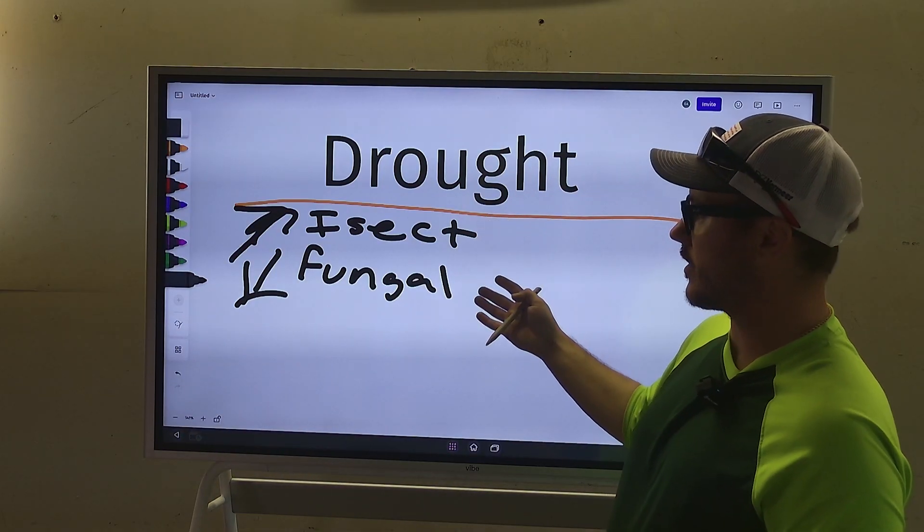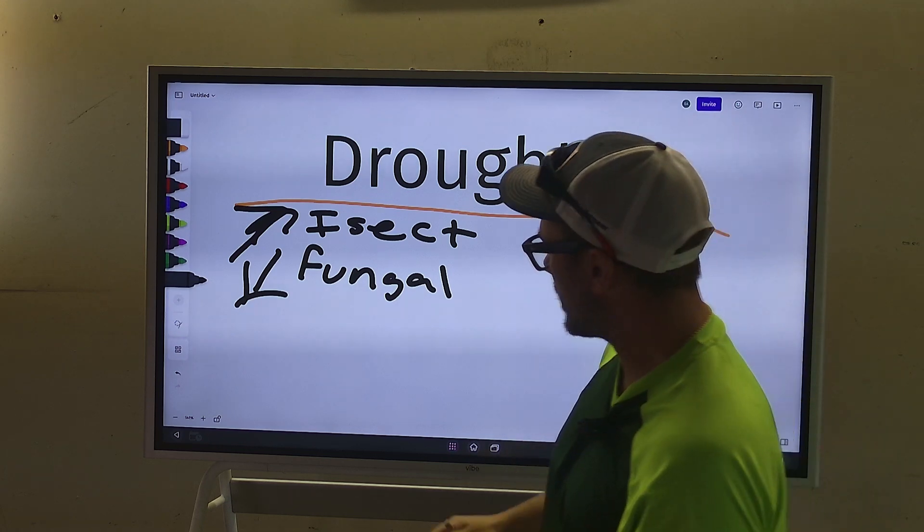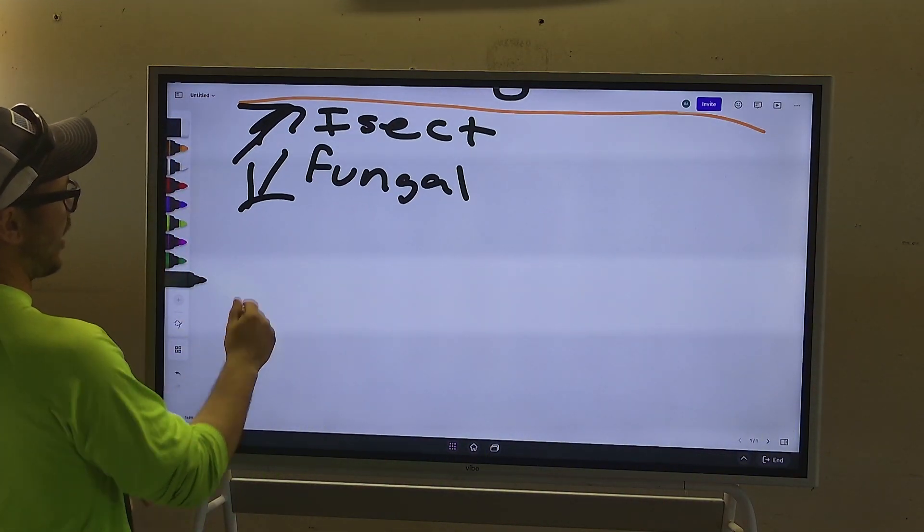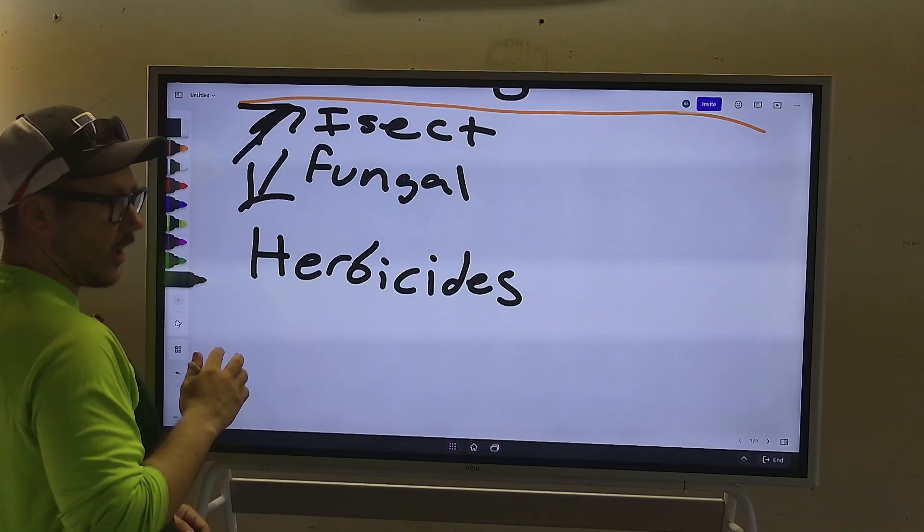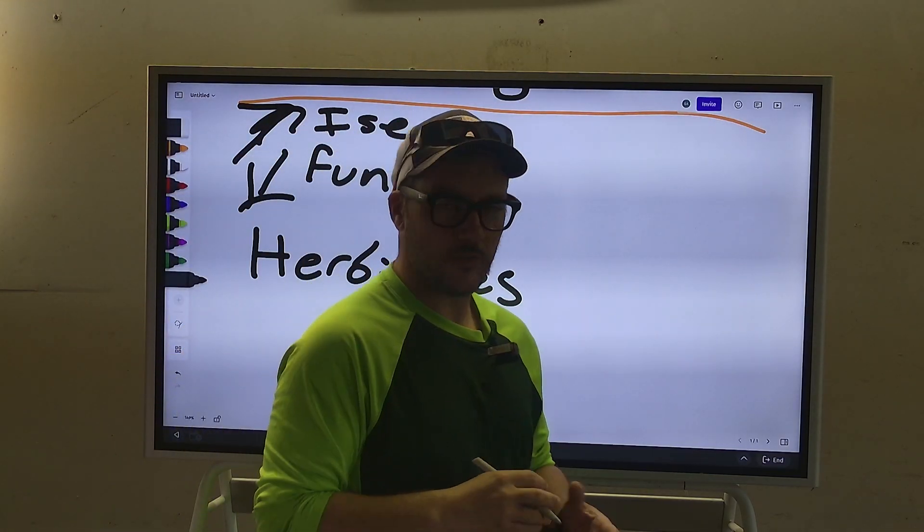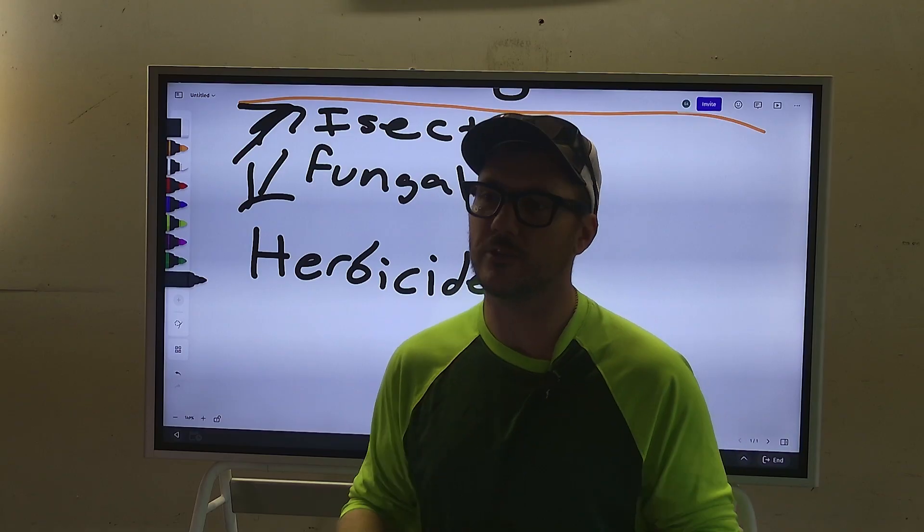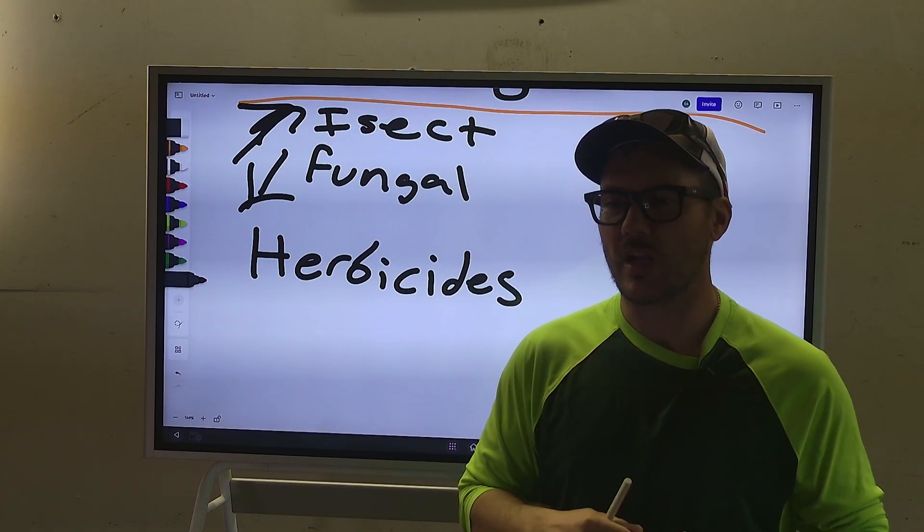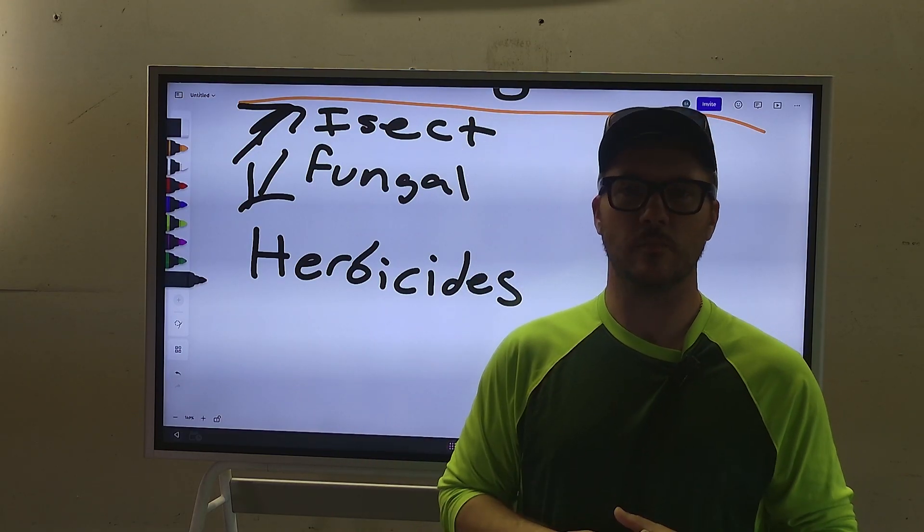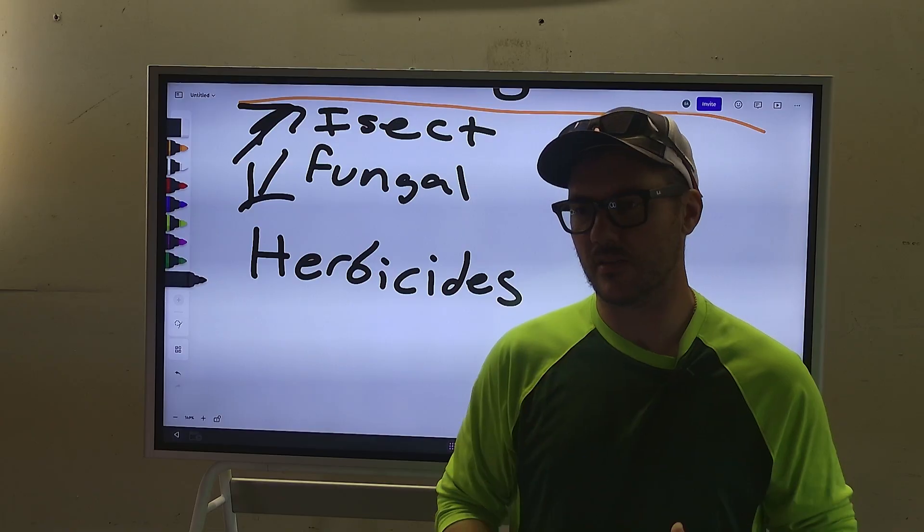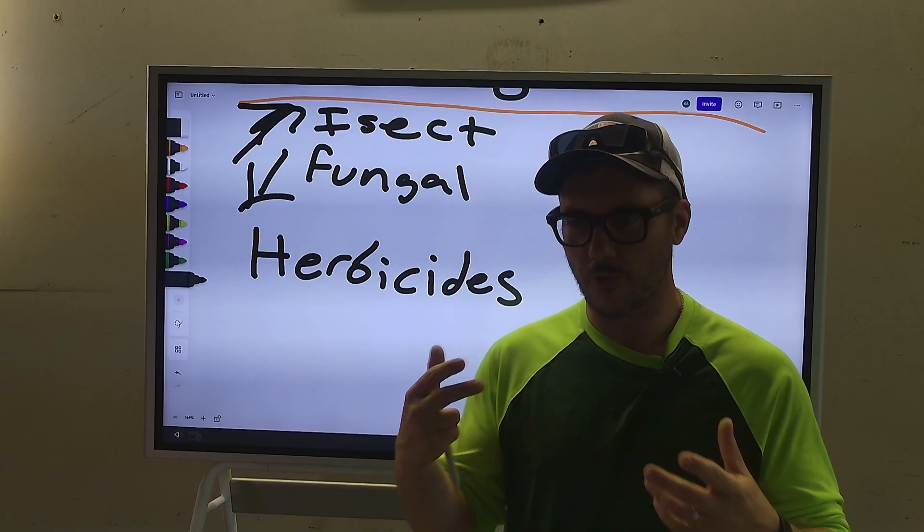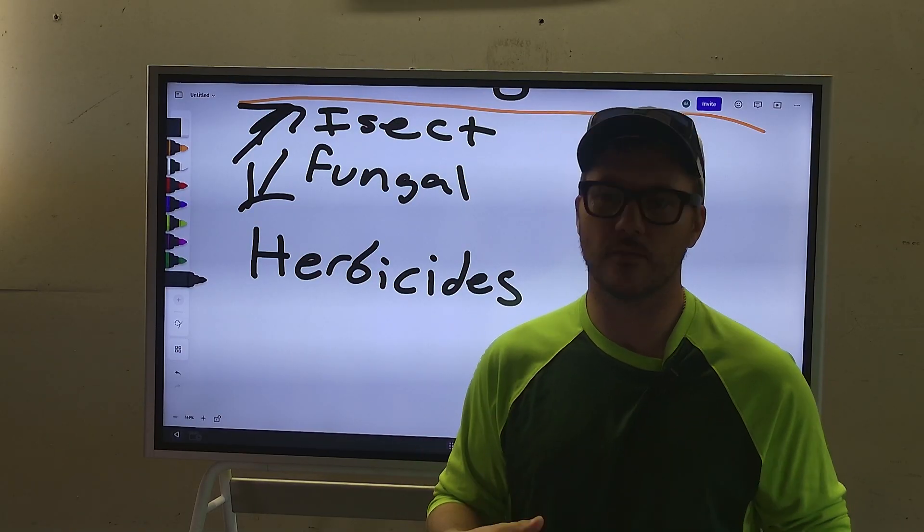Now what do we see as far as herbicides? How do herbicides function? So herbicides work kind of interestingly with droughts and it depends on where you are in the drought. If you're at the beginning of the drought, herbicides are going to function pretty much the same. They're still going to go through the processes that whatever you're applying it to is still going to go through its natural states.